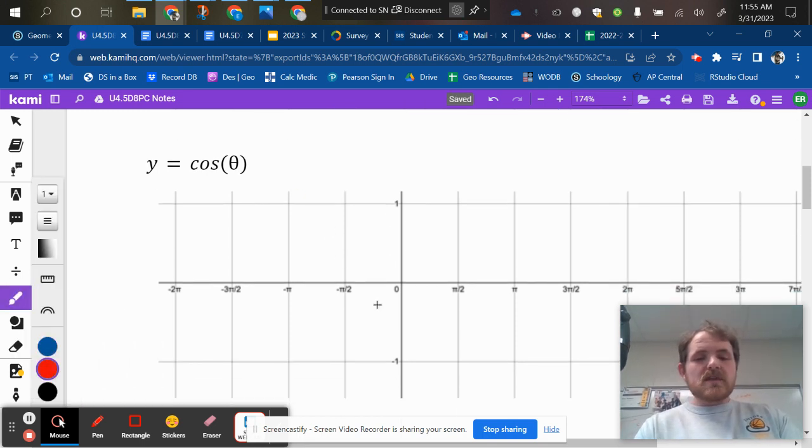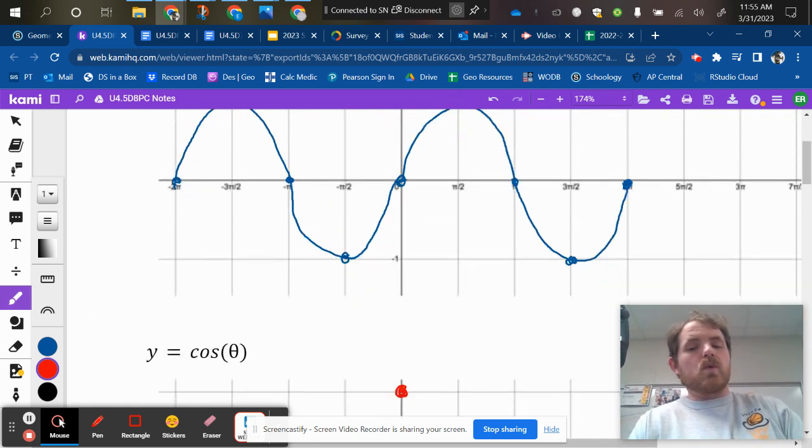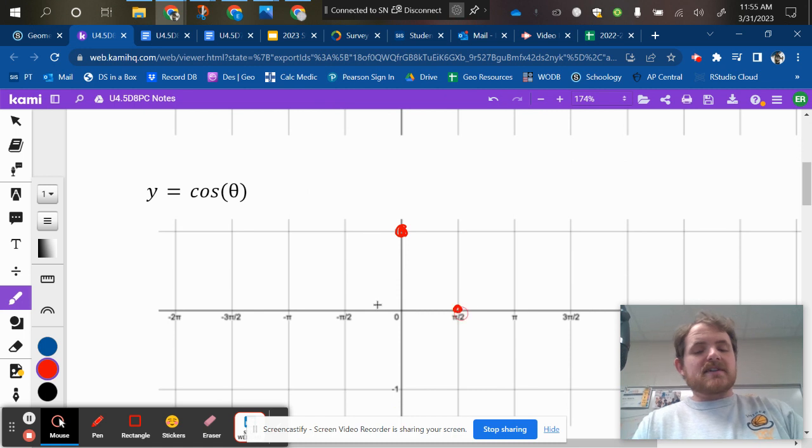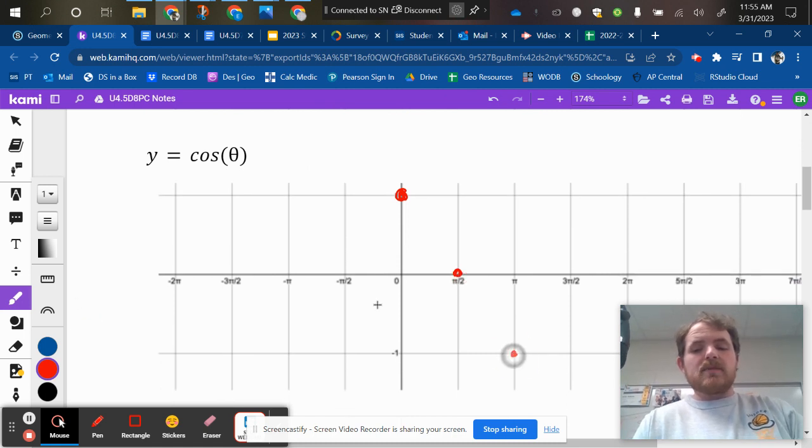So for cosine, the first y value, sorry, the first x value, yeah. It starts up at 1. When I said the first value, I'm talking about the coordinate 1, yep, and then it comes down to 0. Khalil's right, he starts up, and it looks like this.